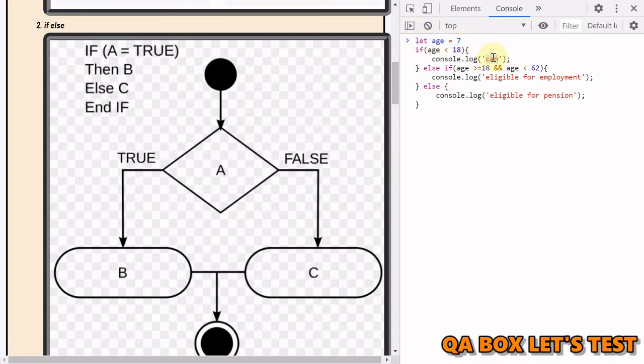So this is a simple program. What I've done is I've created a variable, let age is equal to 7. If age is less than 18, this block of code will get executed if this statement evaluates to true. Else if...